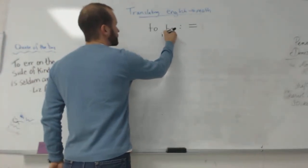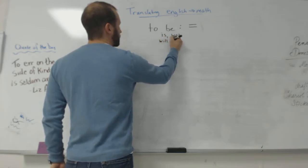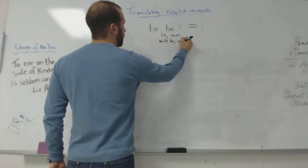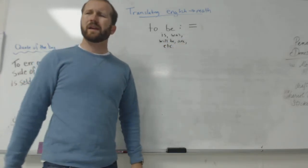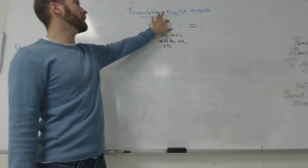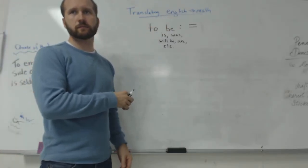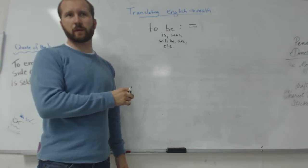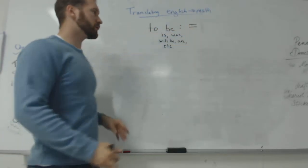So there's lots of forms of to be. We could have is, was, will be, are, etc. Any form of to be—is, was, will be, are, were—those are the most common ones, I guess.